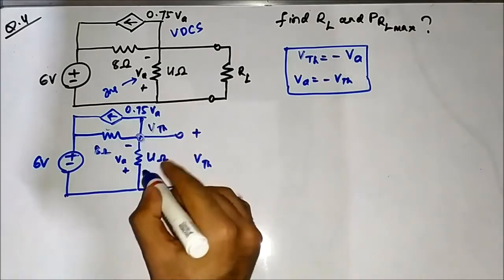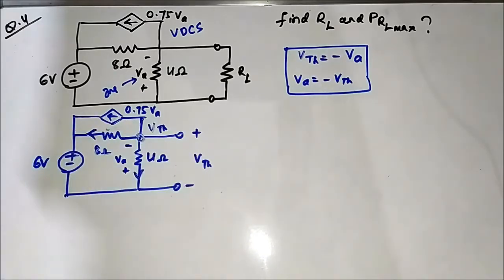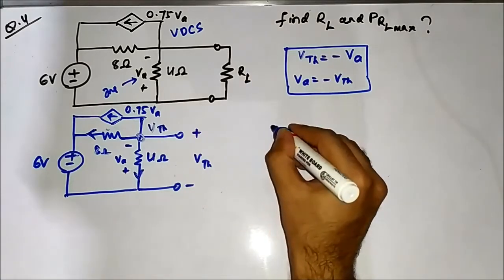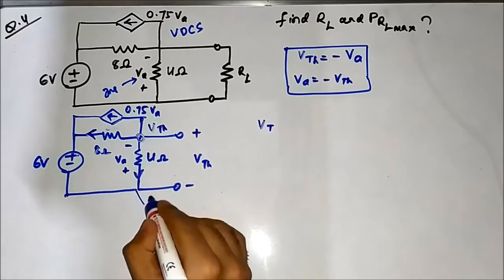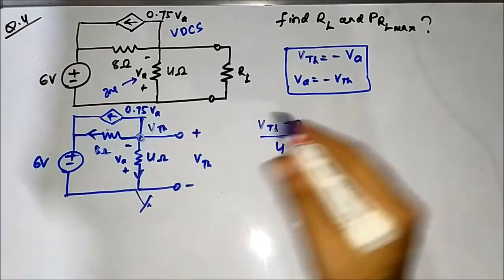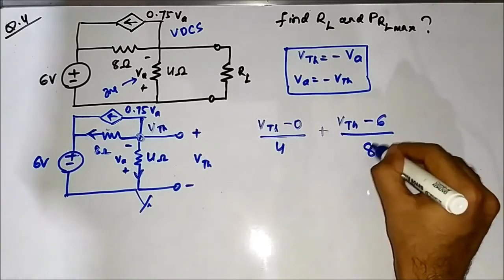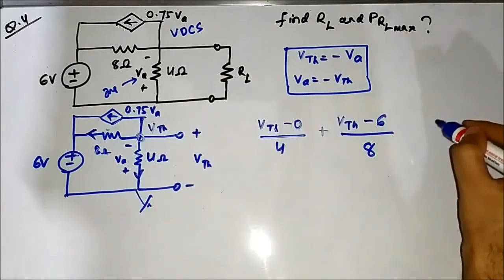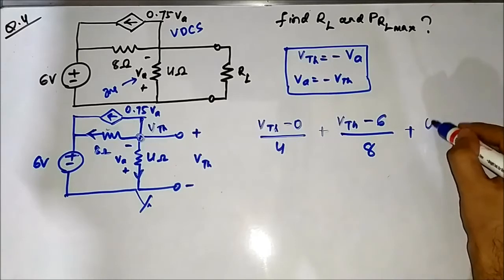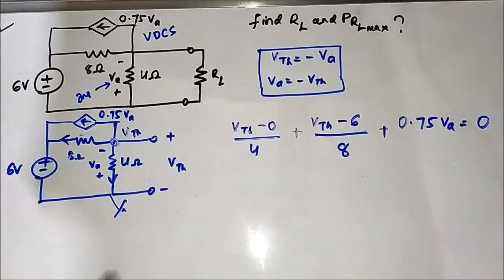Applying KCL at the node, with current directions defined, the KCL equation is: Vth minus 0 over 4, plus Vth minus 6 over 8, plus 0.75 Va equals 0.